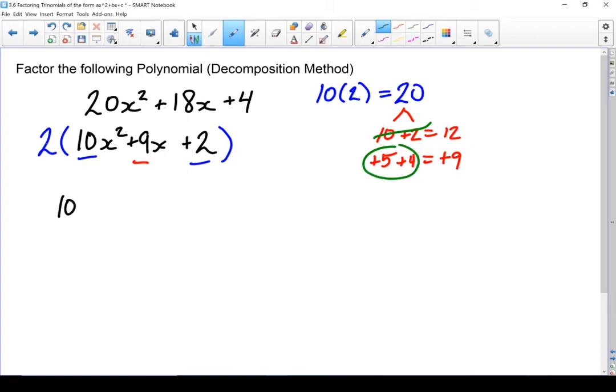So I'm going to rewrite our inside part. That inside trinomial: 10x squared doesn't change, but I'm going to break that 9x down into plus 5x and plus 4x. And then plus 2 doesn't change. Split it up into two parts. I'm going to do each part separately. Front half, I can factor a 5x out of both of those. 10x squared divided by 5x should give me 2x. And 5x divided by 5x doesn't leave me with nothing. It leaves me with a plus 1. And the last part, when I look at the 4x plus 2, I can factor a plus 2 out of both, which should leave me with 2x plus 1.